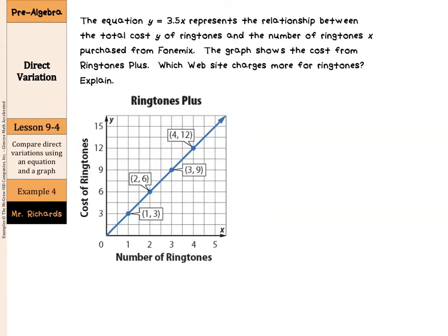In our last example, we need to compare direct variations using an equation and a graph. The equation Y equals 3 and 5 tenths X represents the relationship between the total cost Y of ringtones and the number of ringtones X purchased from phone mix. The graph shows the cost from ringtones plus. In our equation, we have Y equals 3.5X and that's for phone mix, which is telling us that it costs $3.50 per ringtone.